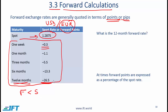Now how do we connect 26.5 to the spot rate? When we have two currencies such as the US dollar to euro, where the quoting convention is to use four decimal places, then we convert this number — which is in points or pips — into a decimal by dividing by 10,000.